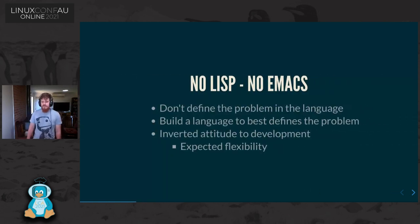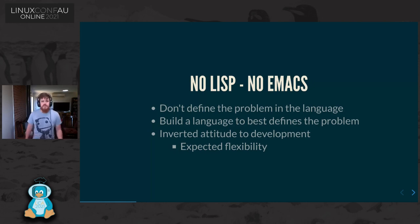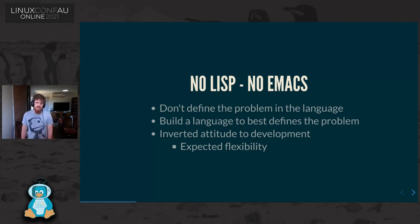No Lisp is no Emacs. Lisp is not about taking a problem and trying to define it in constructs of the language — it's about building a new language around the problem itself. You create data structures, you create functions, and it feels like it's naturally part of the language rather than an attack on procedural or class-based languages. It creates a different expectation of development.